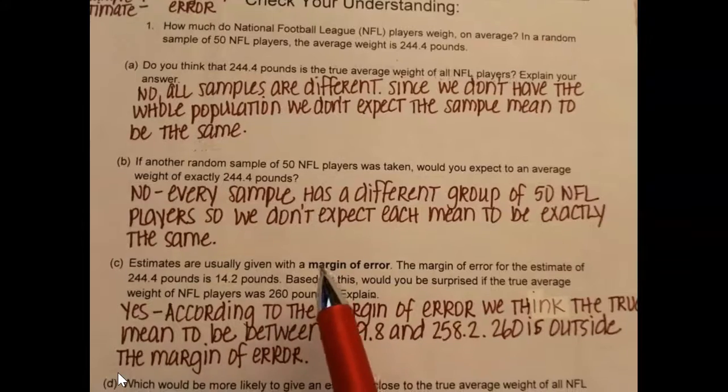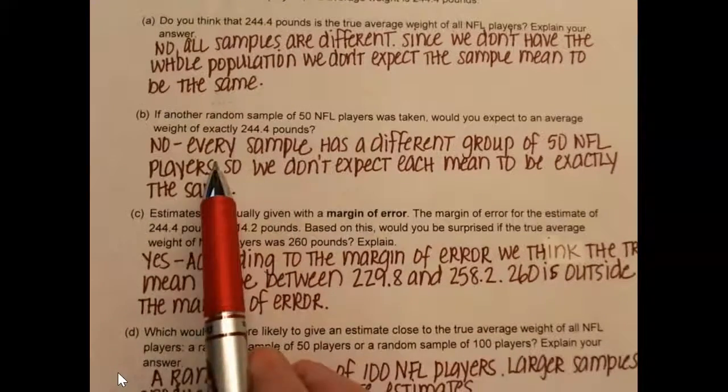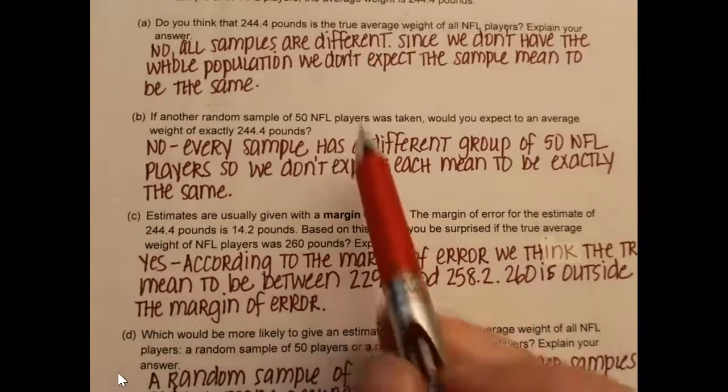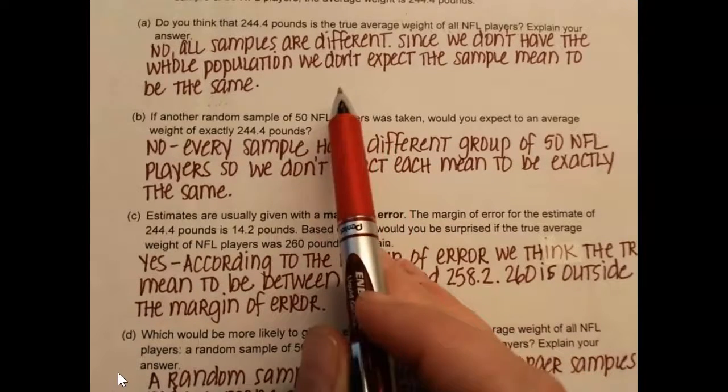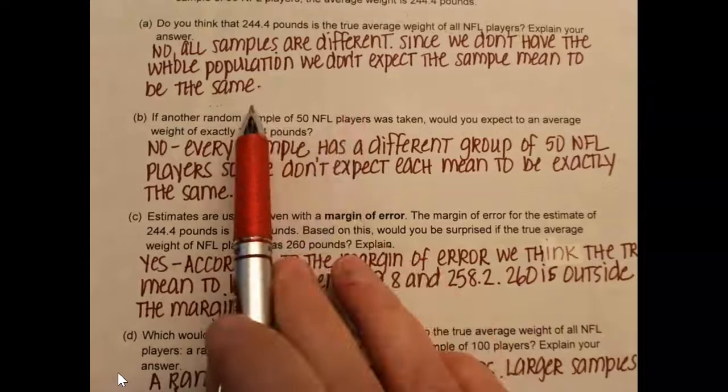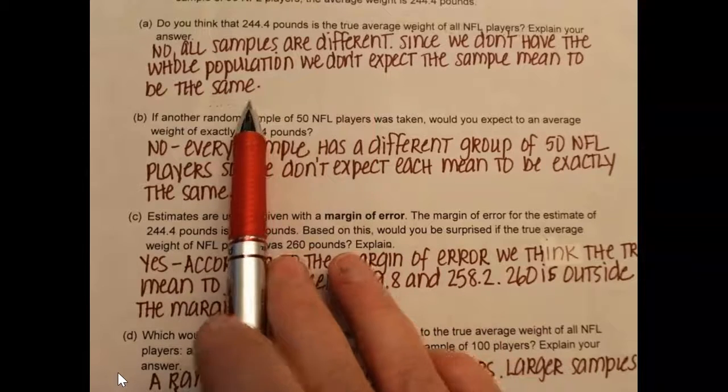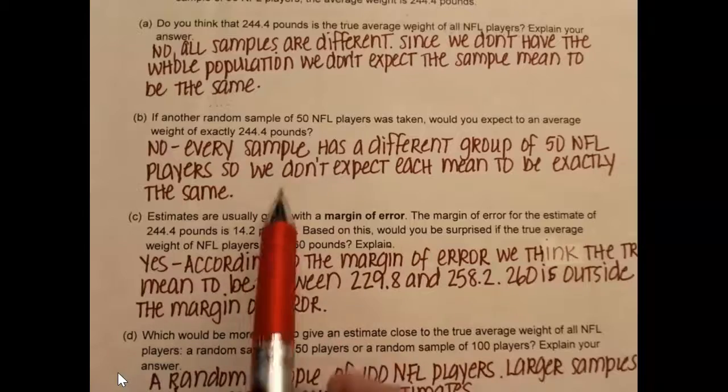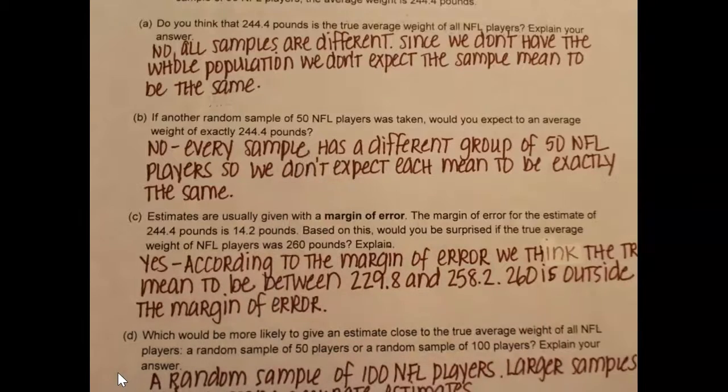Okay, now if another random sample of 50 NFL players... well, so that's what we're talking about. These both are kind of asking the same thing. All samples are different. Since we don't have the whole population, we don't expect the sample mean to be the same. And if we draw another sample, every sample is different. That's sampling variability.